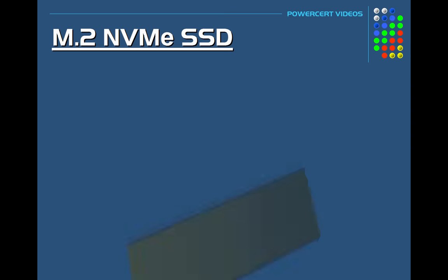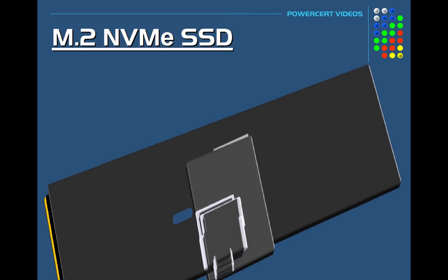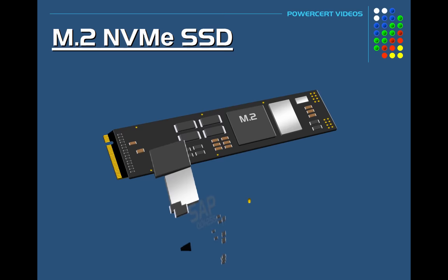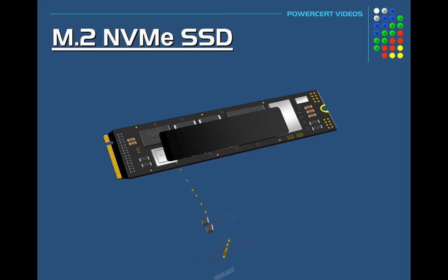In this video we're going to talk about M.2 Non-Volatile Memory Express Solid State Drives or SSDs. These drives are relatively new and have only been around for a few years. Just like regular 2.5 inch SSDs, M.2 SSDs also use flash memory for data storage and they are very fast.